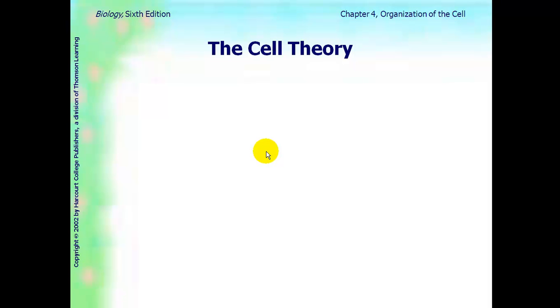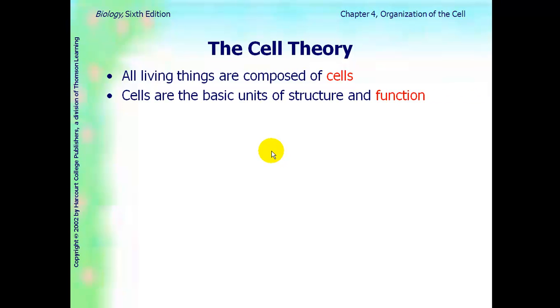First thing you need to know is the cell theory. When I was in college, I had to memorize all three steps and actually write them out on my exam. All living things are composed of cells. Cells are the basic units of structure and function. And cells only come from other living cells.